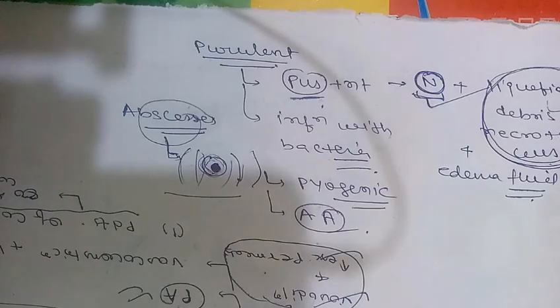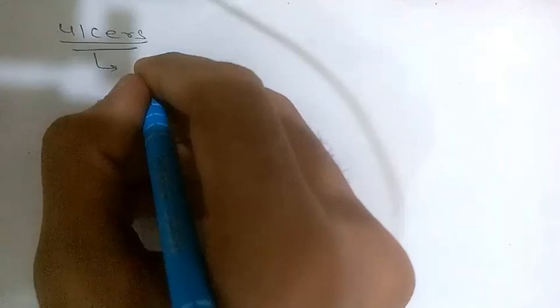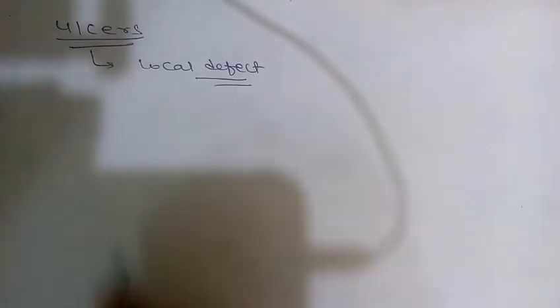The fourth morphological pattern is ulcers. An ulcer is a local defect of the surface of any organ or tissue that is produced by the shedding of inflamed necrotic tissue. It is a local defect of the surface of any organ or tissue.